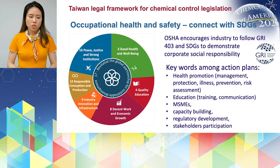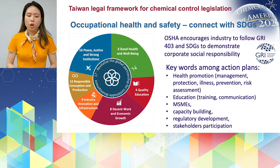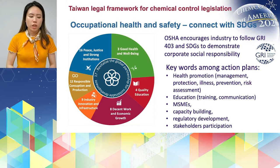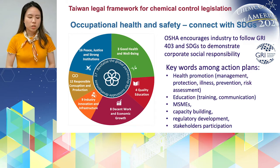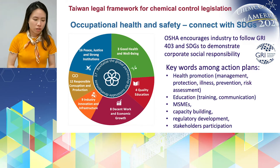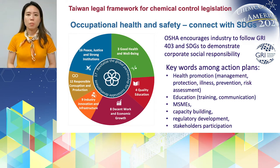Let's move to GHS and workplace chemical safety. Our Ministry of Labour and its subsidiary agency OSHA encourage industry to follow GRI 403 and SDGs to demonstrate corporate social responsibility. The Ministry of Labour identifies several aspects of SDGs highly connected with workplace safety about chemical management — including SDGs 3, 4, 8, 9, 12, 6, and 17 — along with related keywords and action plans.